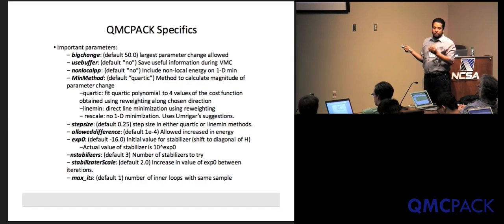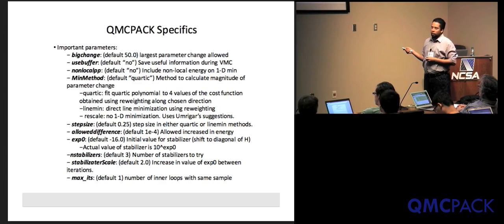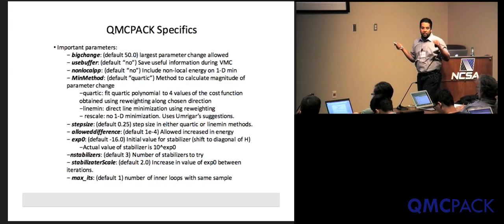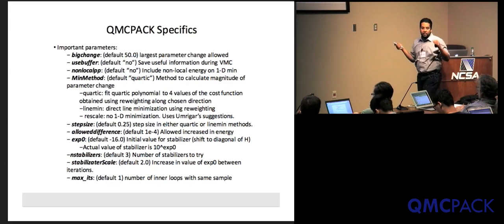To summarize: once you understand the three or four crucial knobs — min method (Quartic vs. LineMin), step size, allowed difference, and exp0 stabilizer — you can optimize anything. If LineMin is not required, Quartic is good enough and the defaults for step size, allowed difference, and stabilizer usually work. If you want something safe that always works, use LineMin with exp0 around 10^-6.